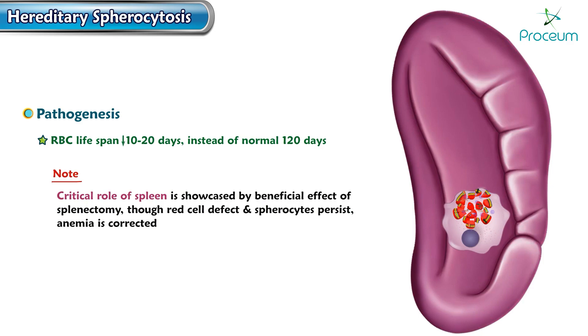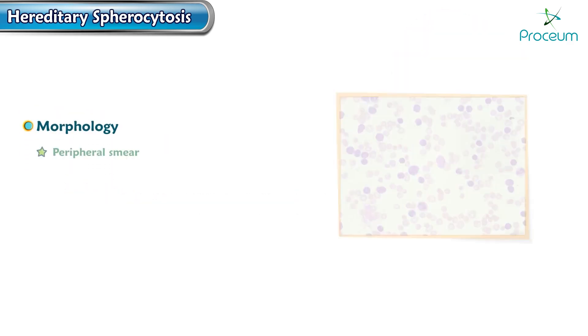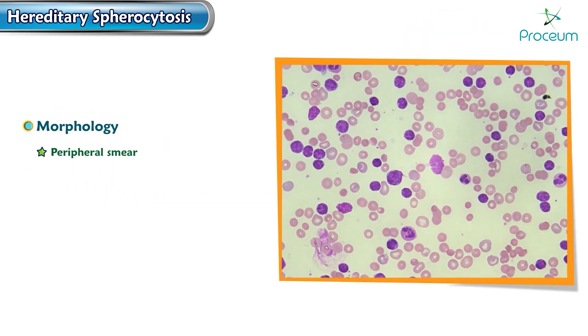Note the critical role of the spleen in hereditary spherocytosis, shown by the beneficial effect of splenectomy — where, though the RBC defect and spherocytes persist, the anemia is corrected.